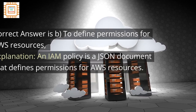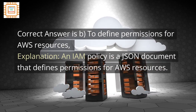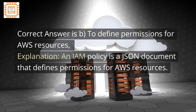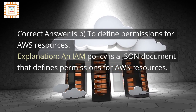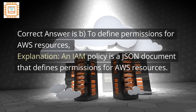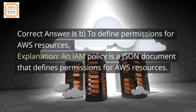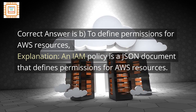The correct answer is B: To Define Permissions for AWS Resources. An IAM Policy is a JSON document that defines permissions for AWS resources.